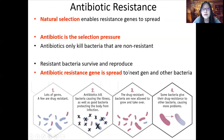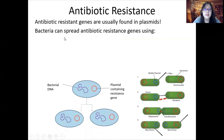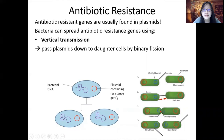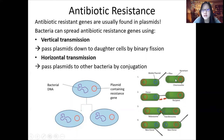Antibiotic-resistant genes are usually found in plasmids — small circular DNA found in bacteria. These genes can be spread using vertical transmission, where the bacteria divides by binary fission and passes the genes down to daughter cells. They can also be spread by horizontal transmission to other bacteria, even different species, by conjugation — using the pilus, replicating the plasmid and transferring it into the other bacteria.